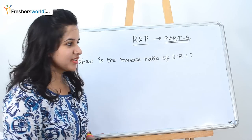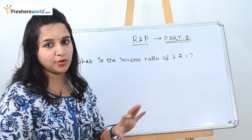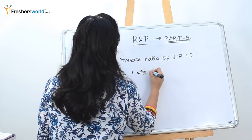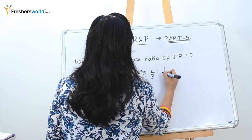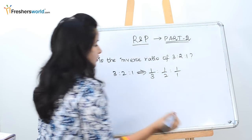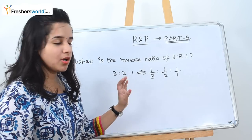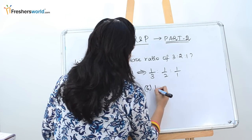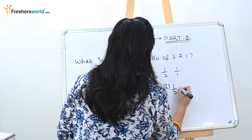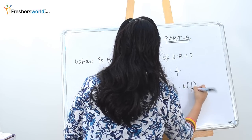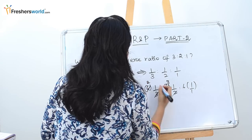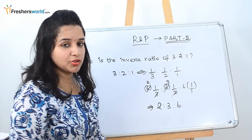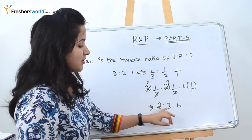The next question is: what is the inverse ratio of 3:2:1? The inverse ratio is 1/3 : 1/2 : 1/1. To clear fractions, multiply through by the LCM of 3, 2, and 1, which is 6: 6×(1/3) = 2, 6×(1/2) = 3, 6×(1/1) = 6. So the inverse ratio of 3:2:1 is 2:3:6.